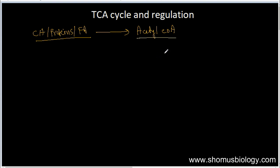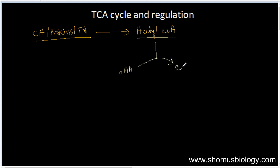Let me draw the TCA cycle to explain this properly. We have acetyl CoA participating with oxaloacetate — also called oxaloacetate — and together they form citrate.